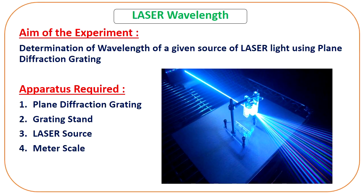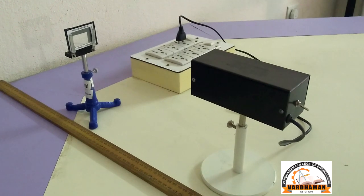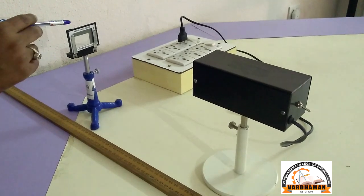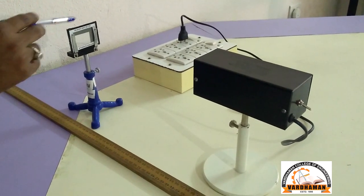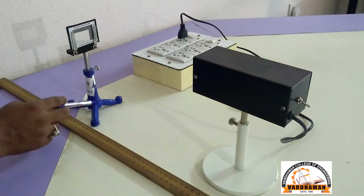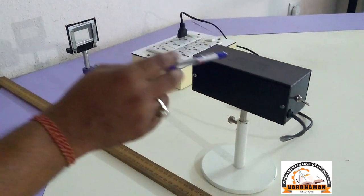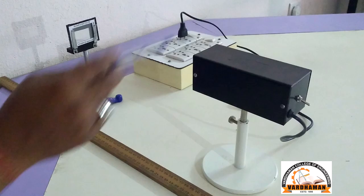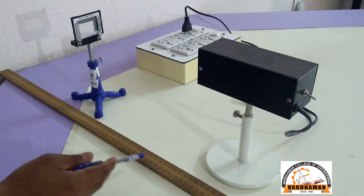Hello everyone, today we are going to study the wavelength of a given source of laser light. For this experiment we need certain apparatus. This one is the diffraction grating, this one is the grating stand, this is the laser source, and this is the meter scale.